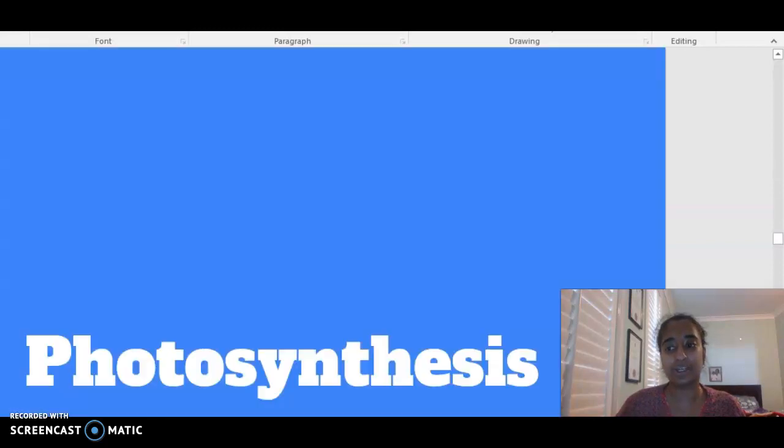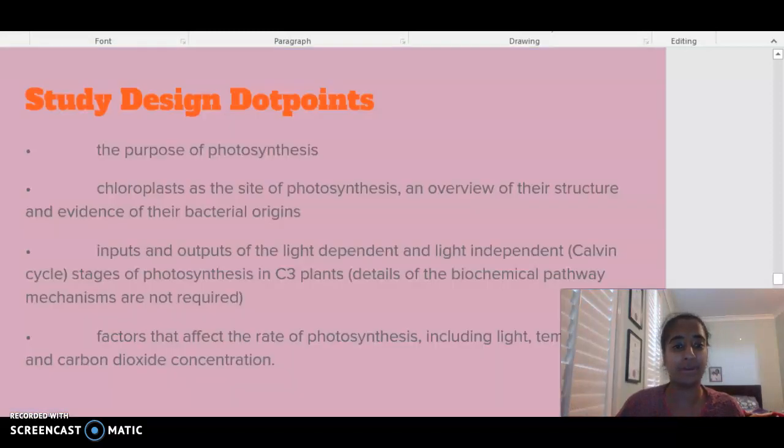In terms of our topic of photosynthesis, we are going to be looking at the following dot points. We're going to be talking about the purpose of photosynthesis, chloroplasts as the site where photosynthesis occurs, the inputs and outputs of the two phases of photosynthesis, the light-independent and light-dependent phases, and factors that affect the rate of photosynthesis.